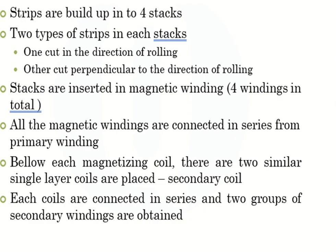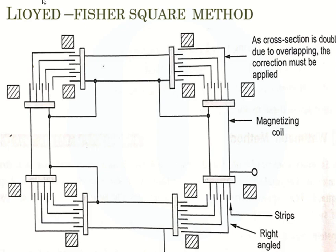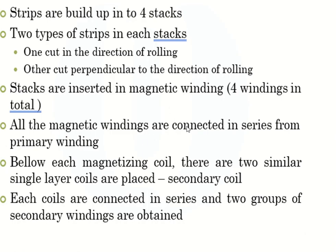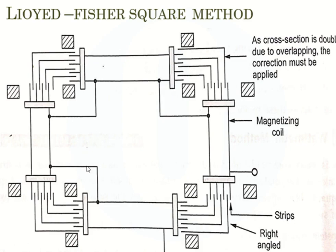The stacks are inserted in the magnetizing winding. This is the magnetizing coil — the first two layers of the coil form the magnetizing coil. All the magnetizing windings are connected in series to form the primary winding.